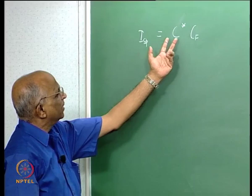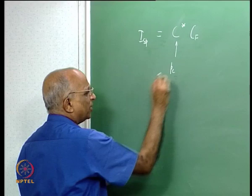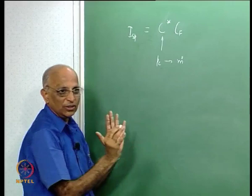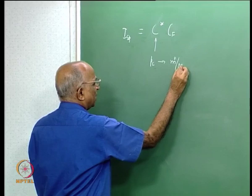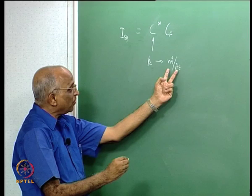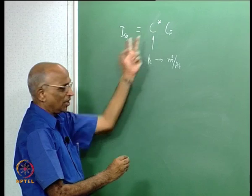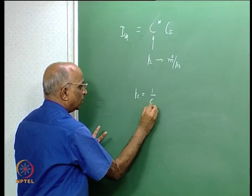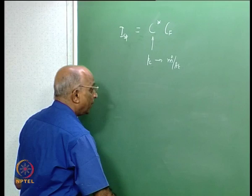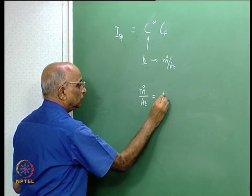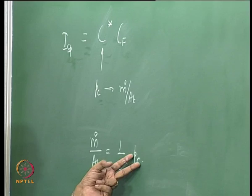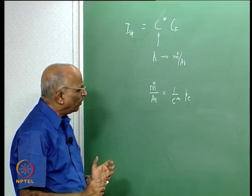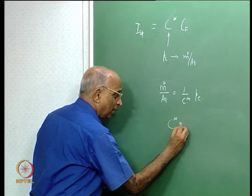C-star efficiency tells how much chamber pressure is developed when I give a certain mass flow rate through the nozzle — the nozzle being identified by throat area. In other words, the transfer function between mass flux through the nozzle at the throat and the chamber pressure gives me C-star. We had the expression: Pc = (ṁ/At) × C*. This tells me the chamber pressure for a given mass flux at the throat.